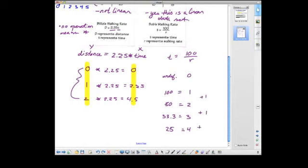Even though this side of the equation is increasing by 1, this side is changing. From here, it's minus 50. From here, it's minus 16.6. From here, it's not a consistent value. So it would not be a linear equation.